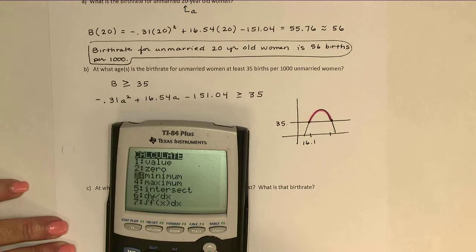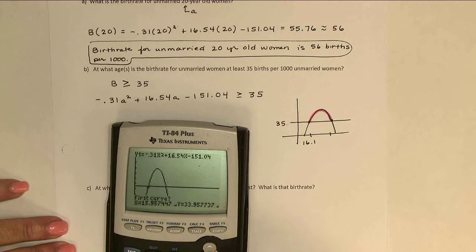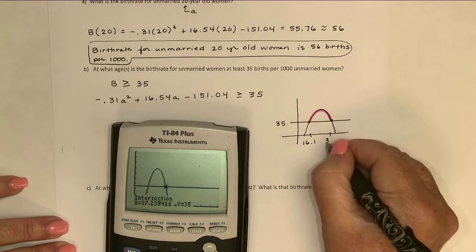And then I'll do it again. This time getting over close to the larger intersection point. Enter, enter, enter. And we're looking at about 37.2.